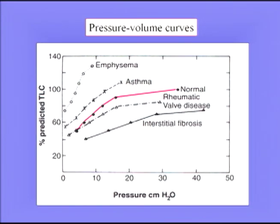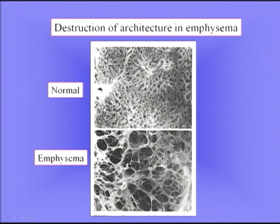The reason for the high lung volumes is the abnormal pressure-volume curves in emphysema. Plotting volume against transpulmonary pressure, in emphysema you get an increased volume for the same pressure and a steeper slope — a higher compliance — compared to the normal red line. Interstitial fibrosis by contrast gives a very stiff lung. The emphysematous lung has high compliance because the architecture of the lung has been destroyed, eliminating the lung's normal recoil.